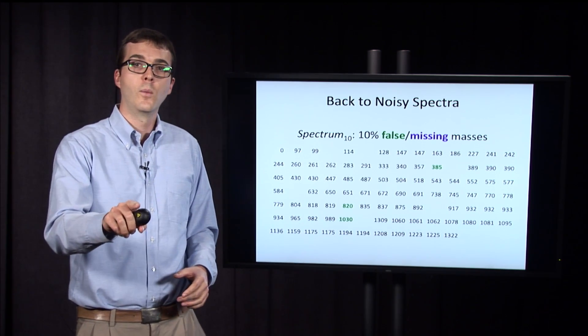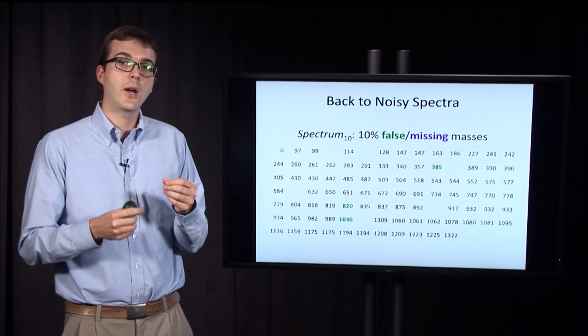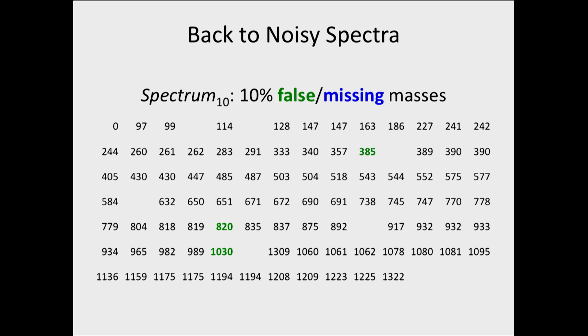Remember, before when we assumed the standard alphabet, it reconstructed the tyrosidine B1 correctly. But here, when we expand the alphabet out to 144 amino acids, the algorithm now identifies the highest scoring peptide as this peptide, and it incorporates 98 and 65 into the peptide.